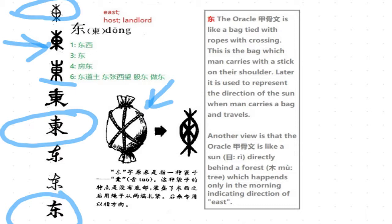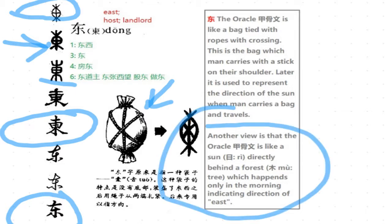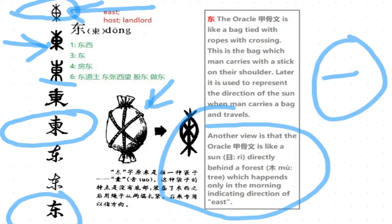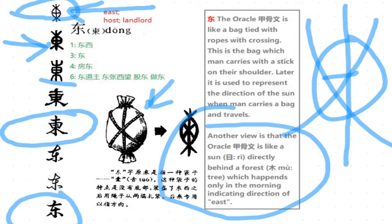Another way to look at this is the second piece here. Some other people say that from this oracle image, the inside part is actually 日, meaning the sun, because the oracle image of sun looks like this. And the other part crossing it is 木, meaning tree or forest. So the whole picture means the sun coming out just behind the forest — this only happens in the early morning, meaning the sun comes out from the direction of East.